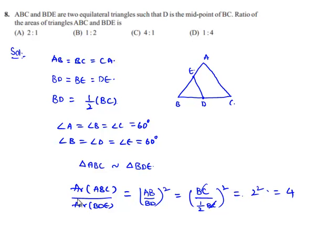So here we got the ratio of area of triangle ABC and BDE as 4, that is nothing but 4 is to 1. So option C is our answer.